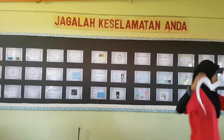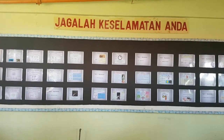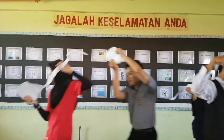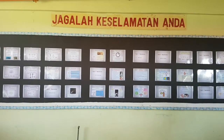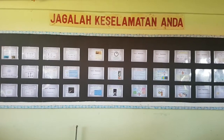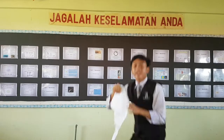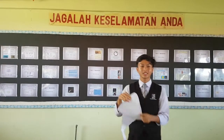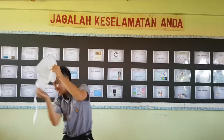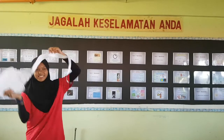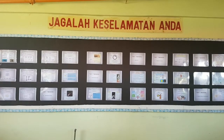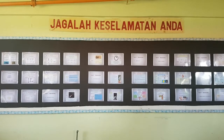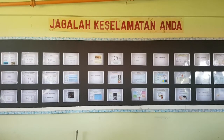The semen contains sperm. Sperm has 3 parts, which are: the head, which contains the nucleus; the neck; and the tail. During copulation, millions of sperms are transferred through the vagina.